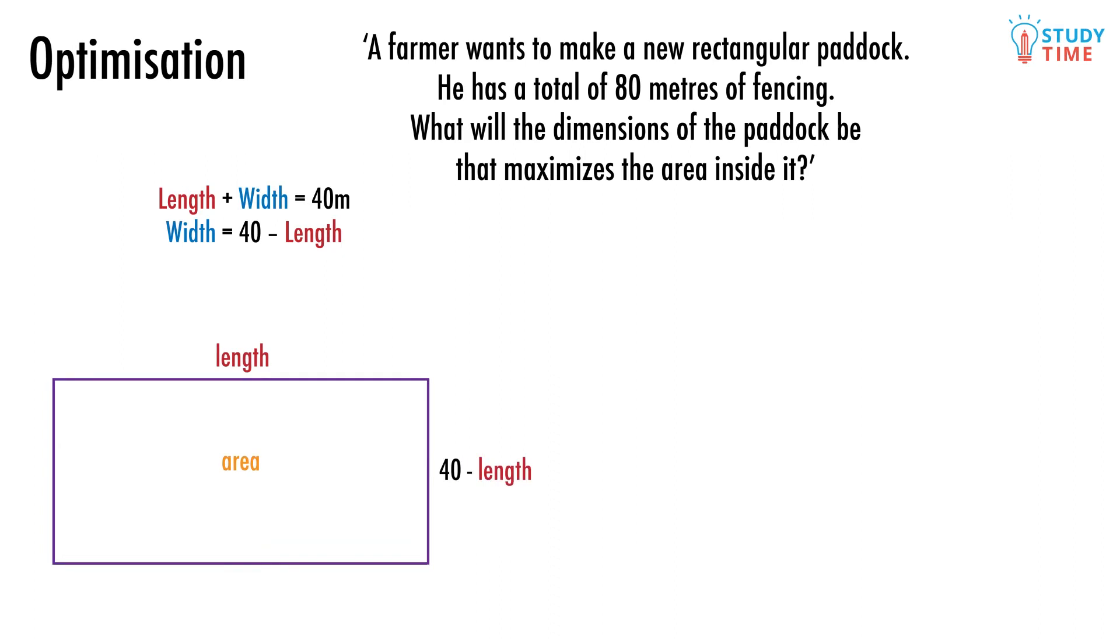Excellent. The original question asked to maximize the area of the paddock, so we're going to need to form an equation for the area. Since the paddock is in the shape of a rectangle, this is easy. Area equals length times width. Now remember that we also know that width equals 40 minus length, so we can replace the width in the area equation with 40 minus length.